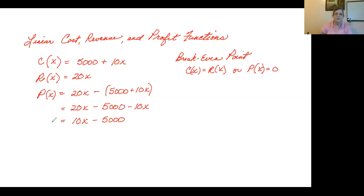If I set the profit function equal to zero, if I've got 10x minus $5,000 equals zero, and I add $5,000 to each side, then my profit per birdhouse has to be $5,000 just for me to break even.